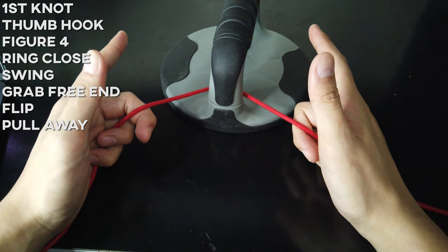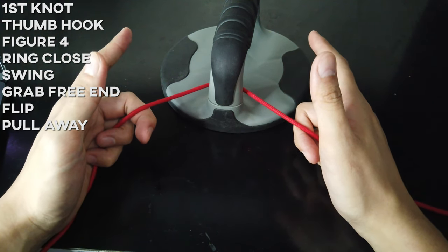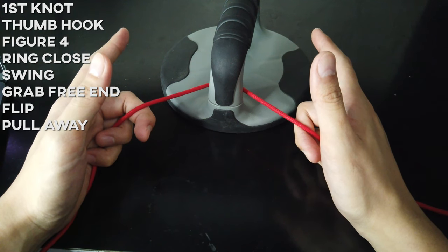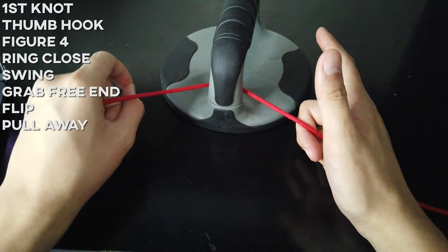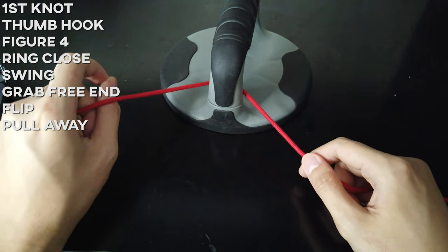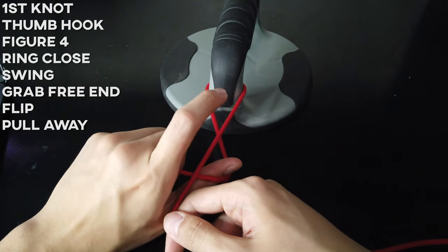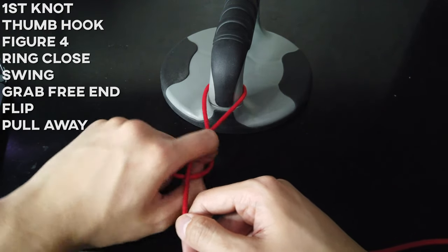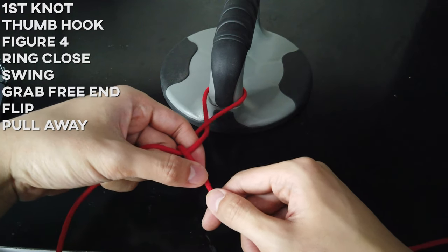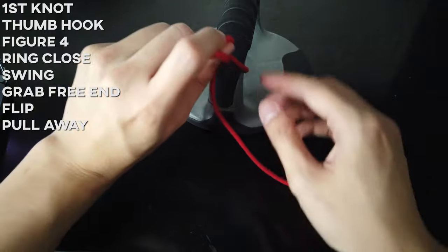For the two-hand tie, let's start with a pistol grip, like playing with a fake invisible gun. The first part is to make a ring on your left hand. Then, you use your thumb and hook underhand, and create a figure 4. So, you close the ring and swing to the other side. Grab the free end with the thumb and index finger, and flip back to the other side.